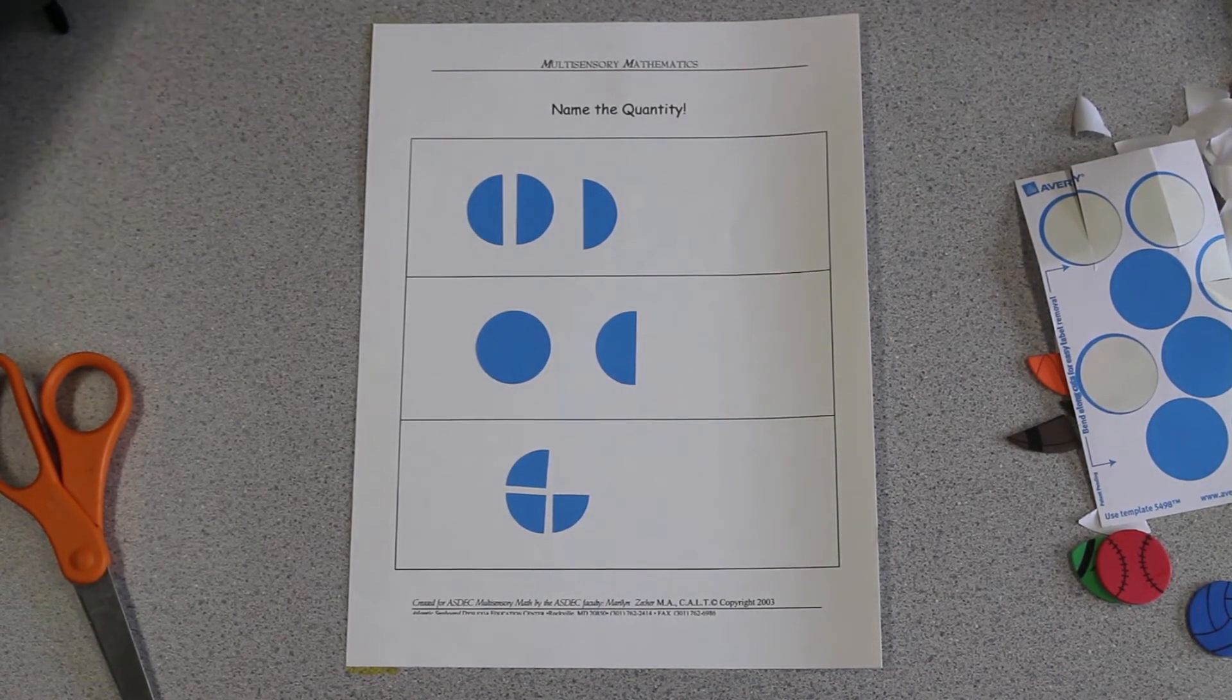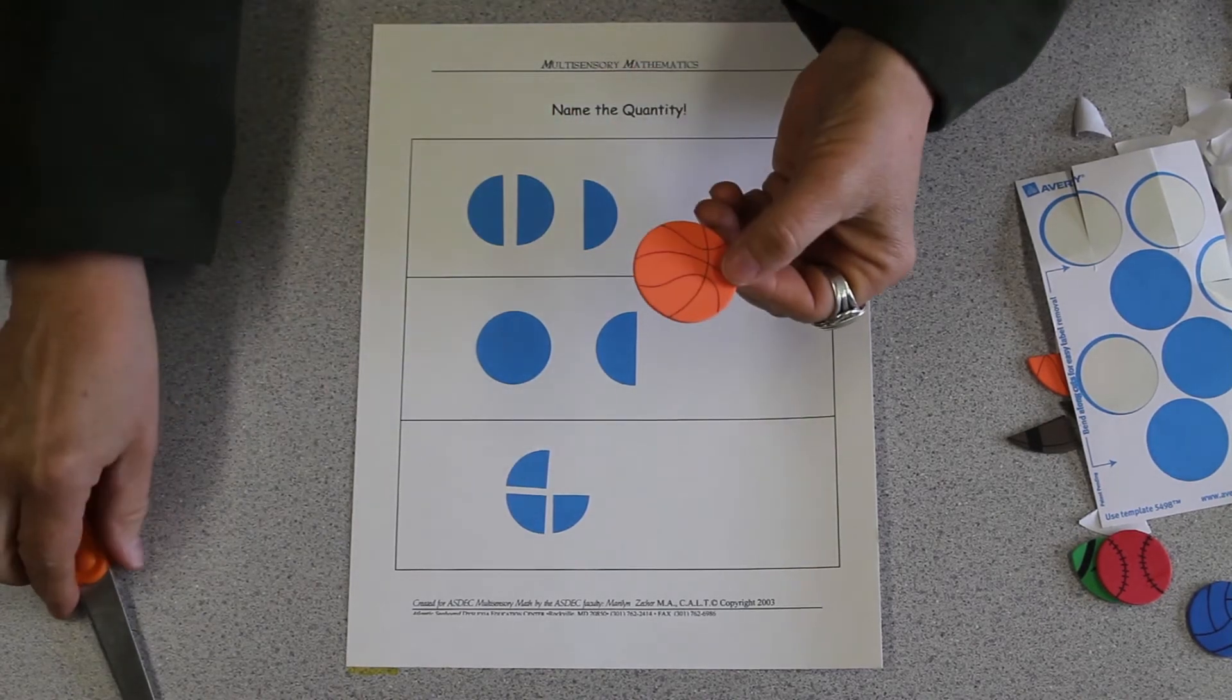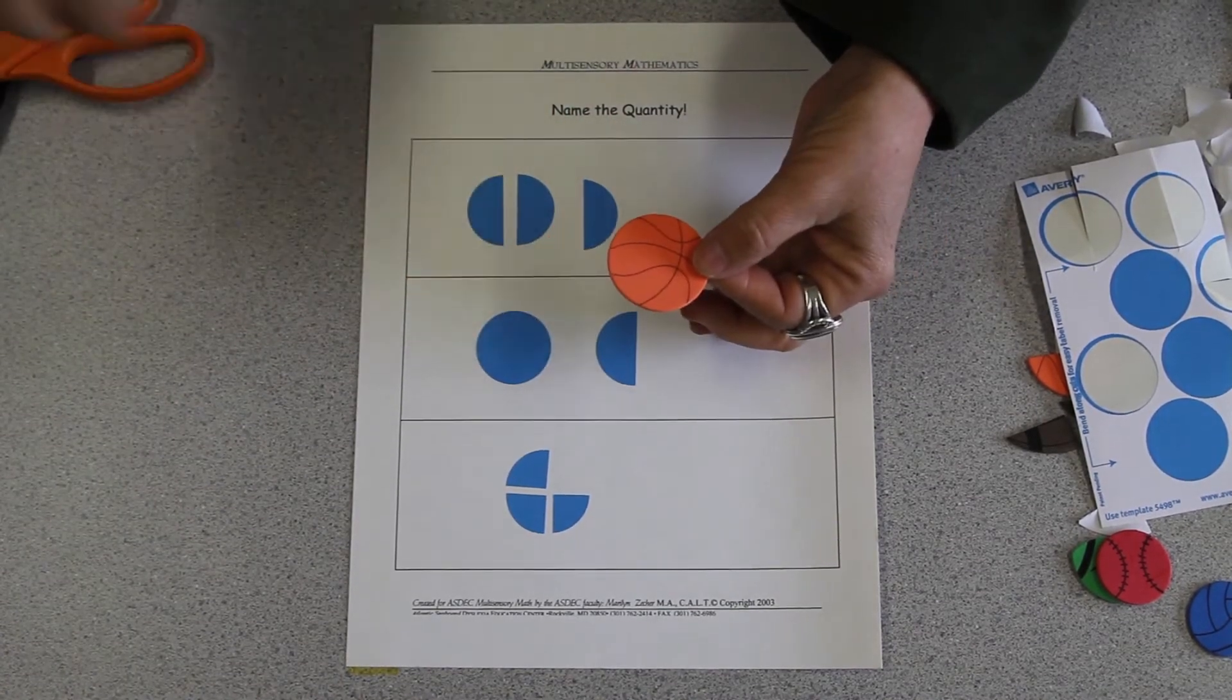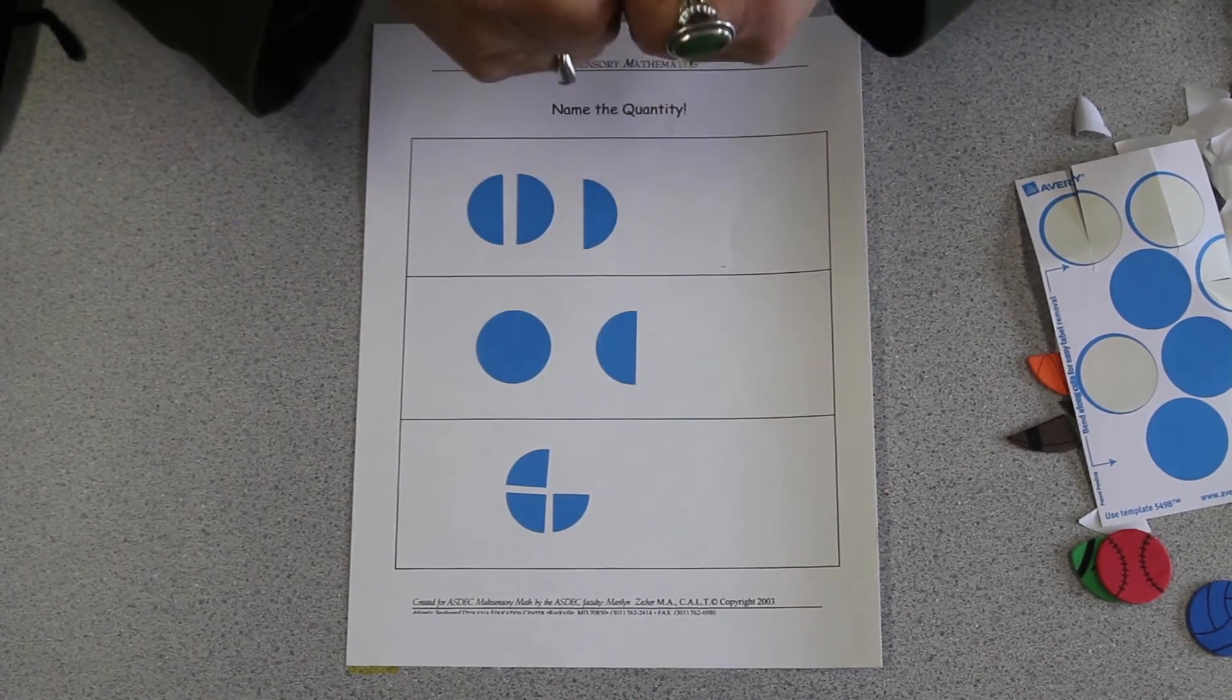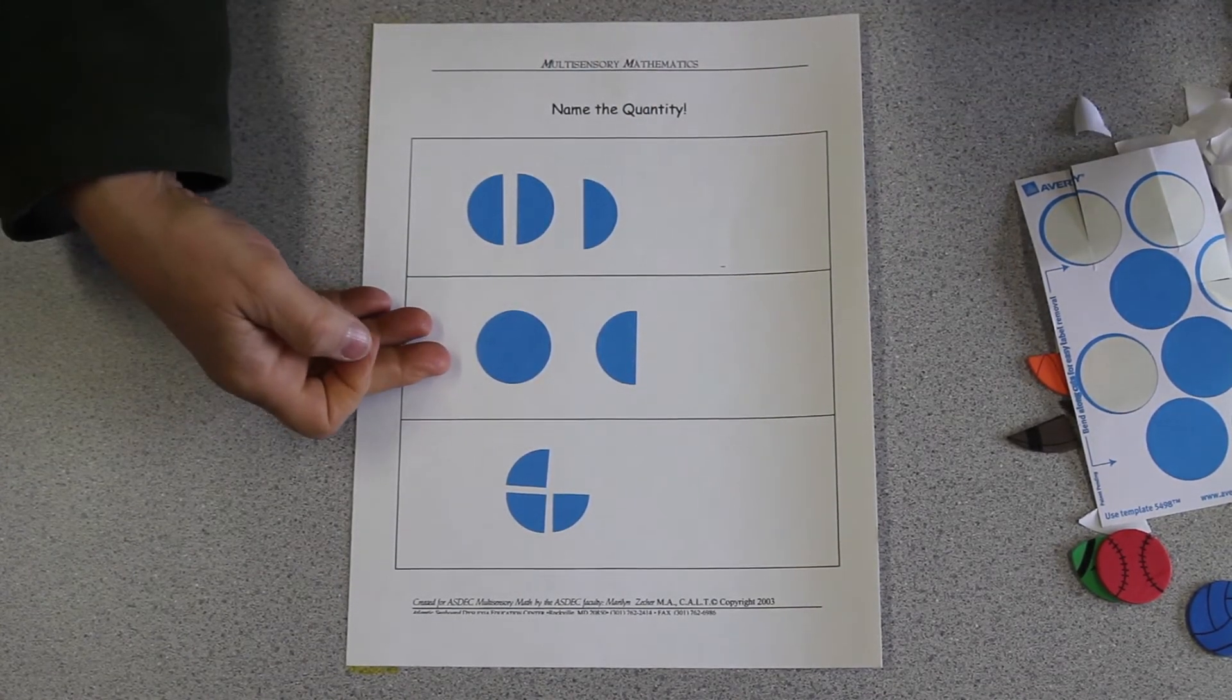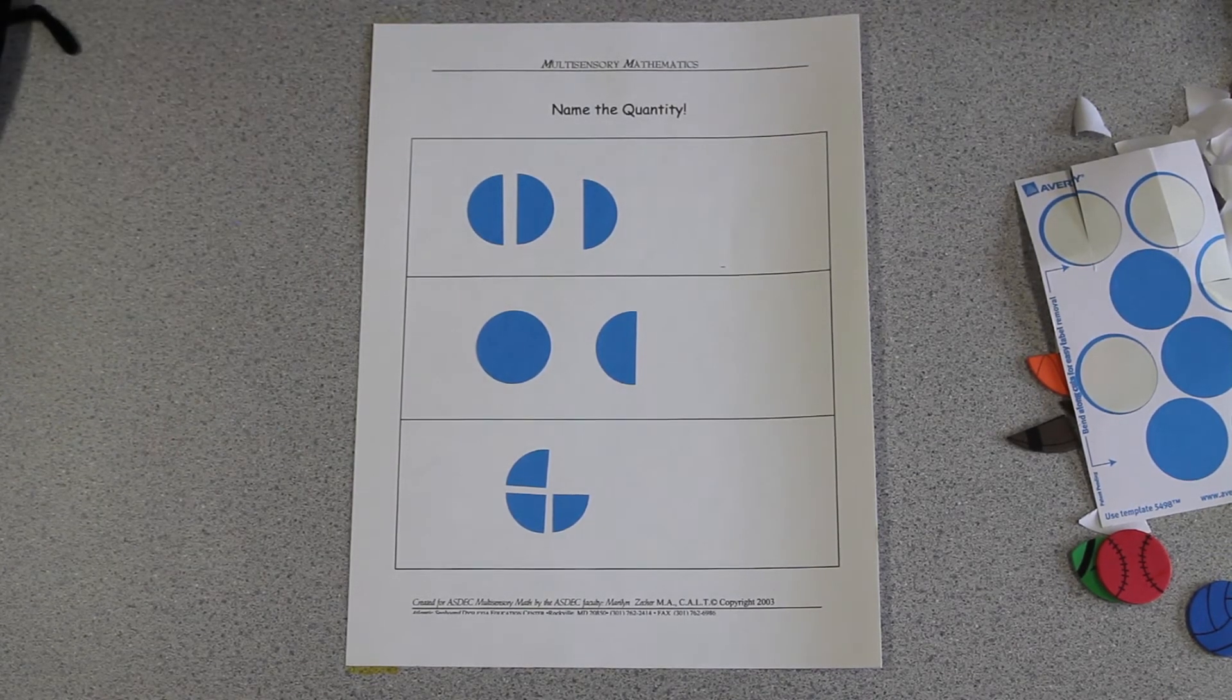In this case, it is the foam shape that is the concrete level where we're actually illustrating with something the child can hold. A pictorial level would be the next level up, and finally using only numbers.